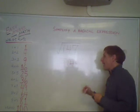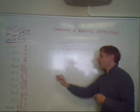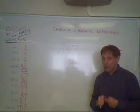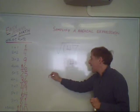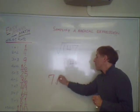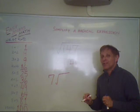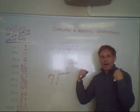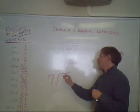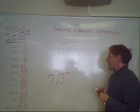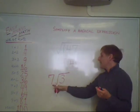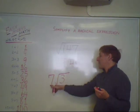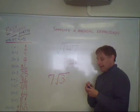Now I could simplify that because the 49 part can come out as its perfect square root. The square root of 49 is 7 — that's what comes out. The 3 part does not have a perfect square root, so that stays in. And that's your answer: the square root of 147 simplified is 7 radical 3 — 7 on the outside, radical 3 on the inside.